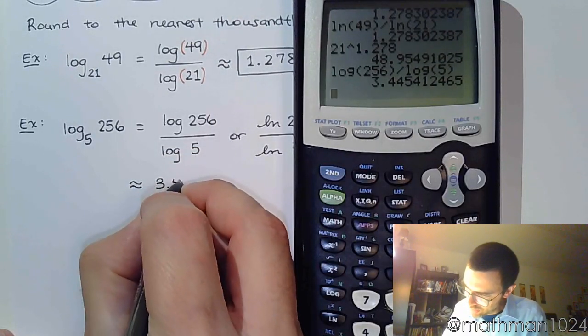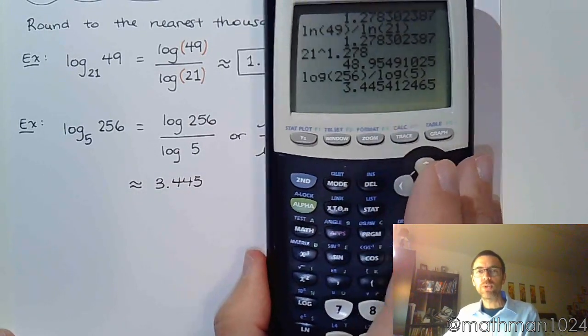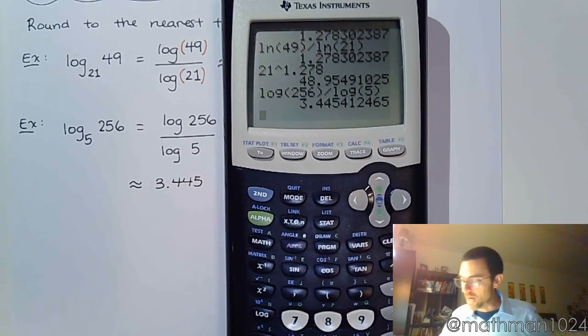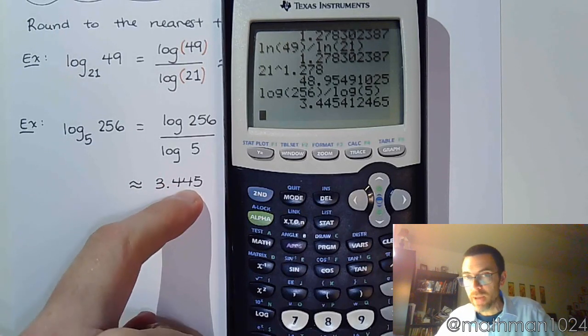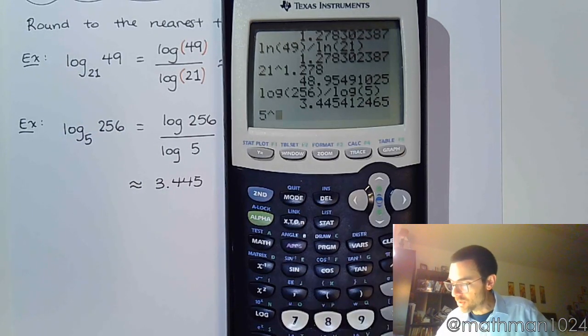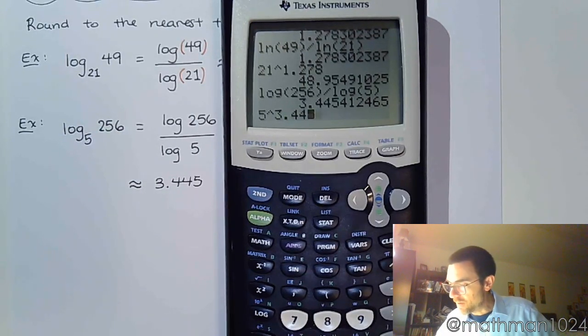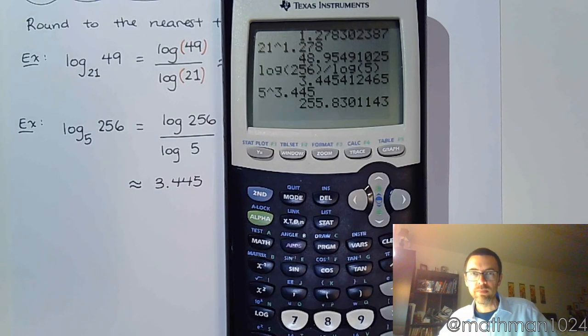So let me check this real quick just to see if I'm on the right track. The answer to the log is supposed to be the power. So I'm saying this is the power of 5 that's going to give me that. So if I do 5 raised to 3.445, do I get something close to 256? Yeah, rounding to the nearest whole number, that's 256.